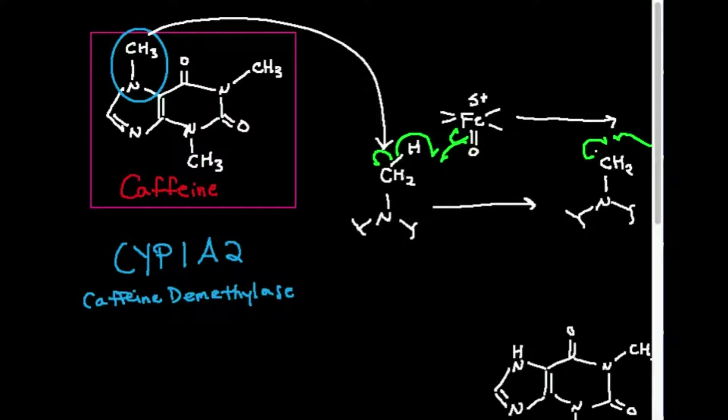Now the liver, as we know, in the smooth endoplasmic reticulum has some enzymes called P450s, and there's lots of them. They're usually given the prefix CYP, or C-Y-P, and the one that's going to play a major role in detoxifying caffeine is CYP1A2. And as a result of the fact that its most well-known substrate is caffeine, it's given this name caffeine demethylase.